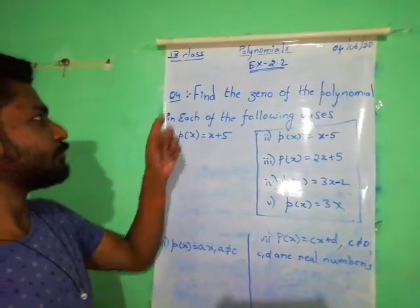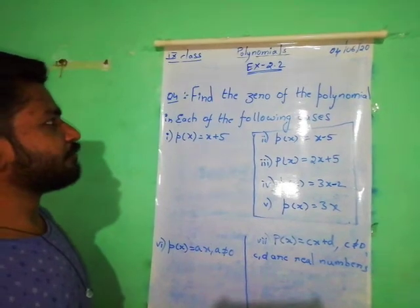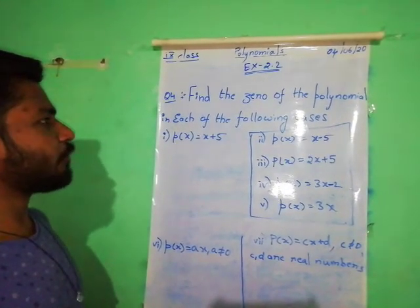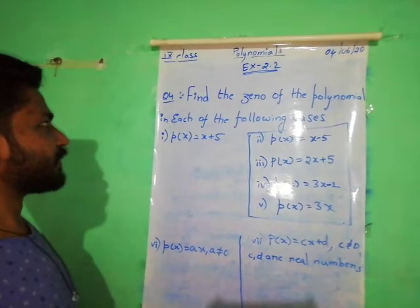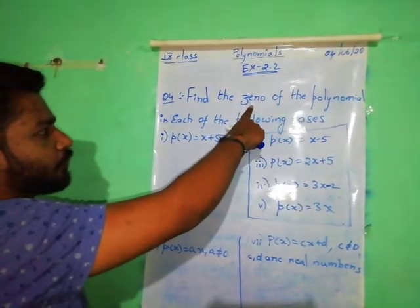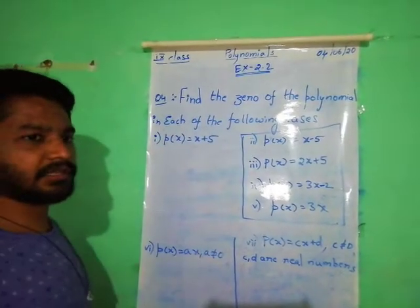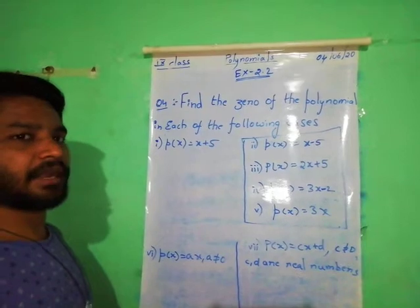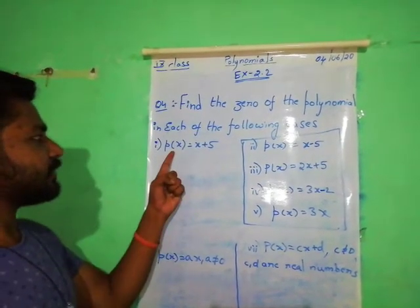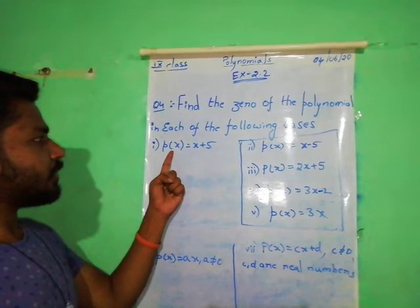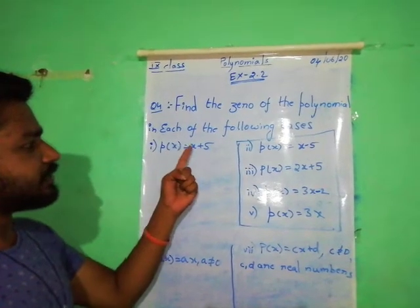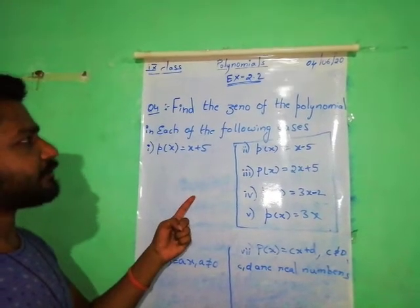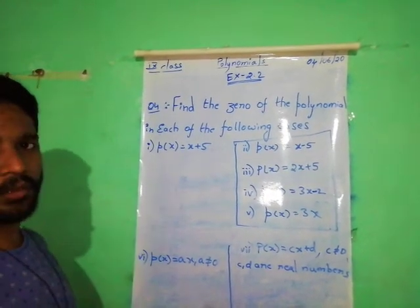XScience 2.2, 4th question. Find the zeros of the polynomial in each of the following cases. Here we find out the zeros of the polynomial by the solving method. Simply, for a given polynomial equated to 0, we have to find out the x value. That particular x value becomes a zero of the given polynomial.